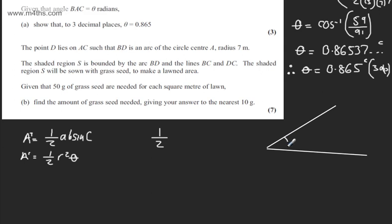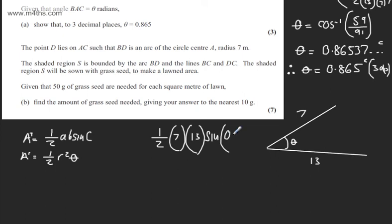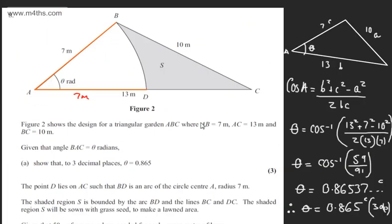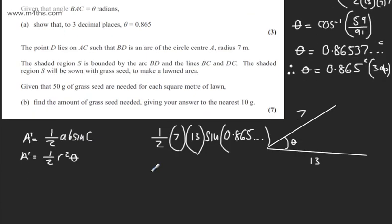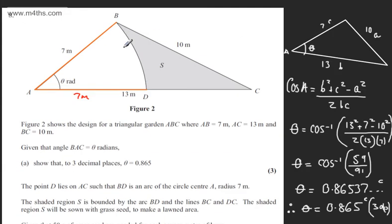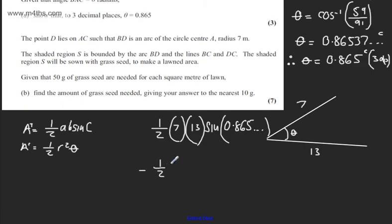So we have theta here, with sides 7 and 13. For the triangle: one-half times 7 times 13 times sine of the stored value 0.865... And then we subtract one-half R squared times theta, where R is 7, so that's one-half times 7 squared times 0.865...